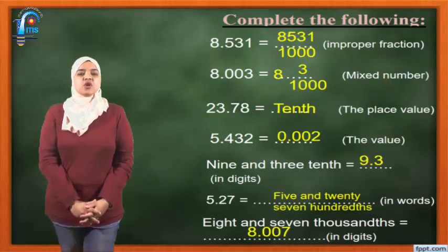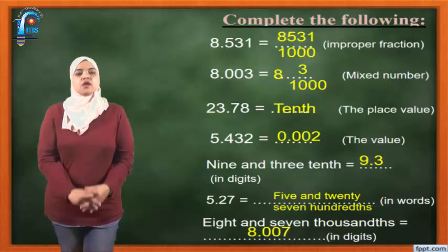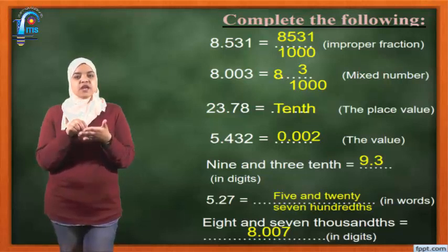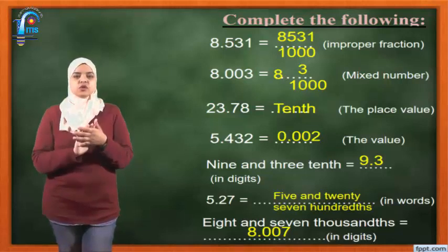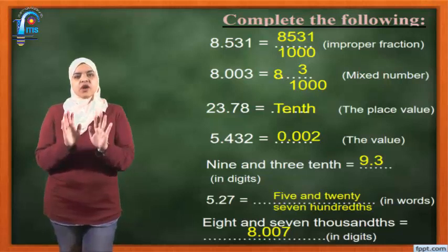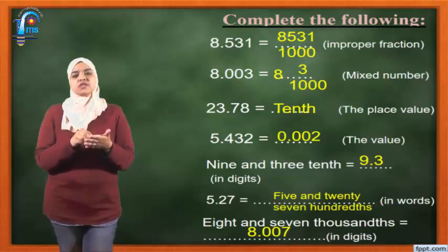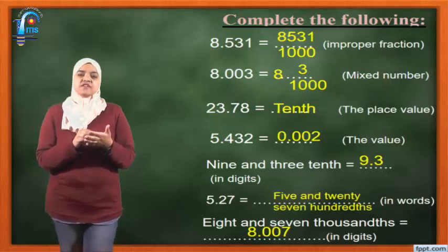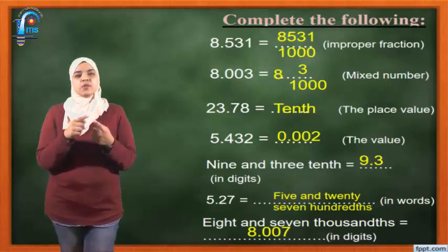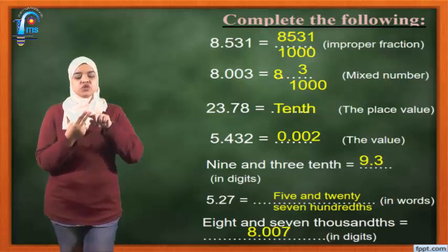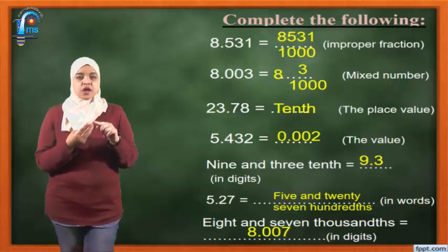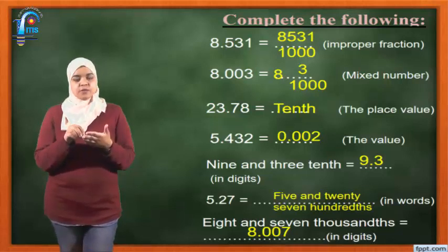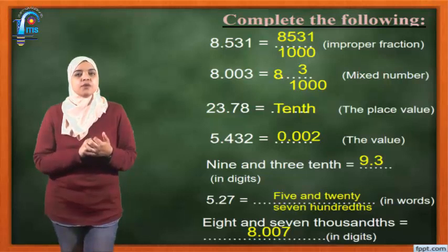9 and 3 tenths — how to write it in digits? I'm going to cross the 'and' and put instead of it a decimal point. What is before the decimal point? 9. So I write 9 point. Then 3 tenths. Tenths means I want just one number after the decimal point. Hundreds means two numbers. Thousands means three numbers. Here tenths, so 3 goes right after the decimal point. The answer will be 9.3.